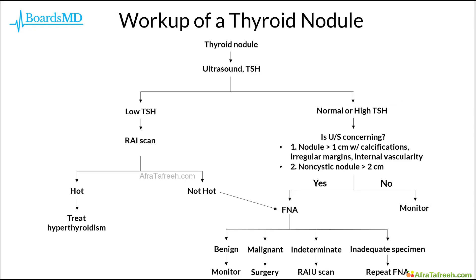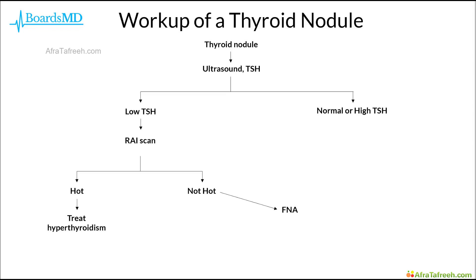Let's jump into our algorithm for the workup of a solitary thyroid nodule. There are essentially two pathways which lead us towards the necessity of getting a sample with the fine needle aspiration, or FNA. We will go through each of these pathways individually, and then bring this all together into one single algorithm. We first start with a patient with a thyroid nodule. The first step is to get an ultrasound of the thyroid as well as a TSH level.